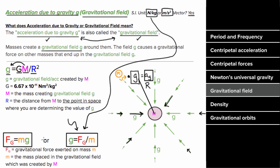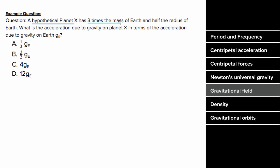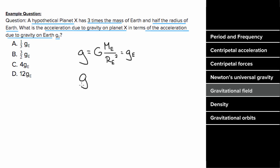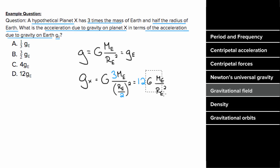So what's an example problem involving gravitational field look like? Let's say a hypothetical planet X has three times the mass of Earth and half the radius of Earth. What would be the acceleration due to gravity on planet X in terms of the acceleration due to gravity on Earth, g sub e? The gravitational field on Earth is big G times mass of Earth over radius of Earth squared, which equals g sub e. For planet X, it's big G times 3 times the mass of Earth, divided by (half the radius of Earth) squared. Squaring the half gives one fourth in the denominator, so three divided by one fourth is twelve — giving 12 times g sub e.